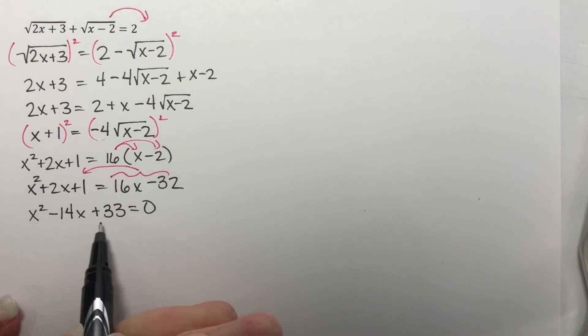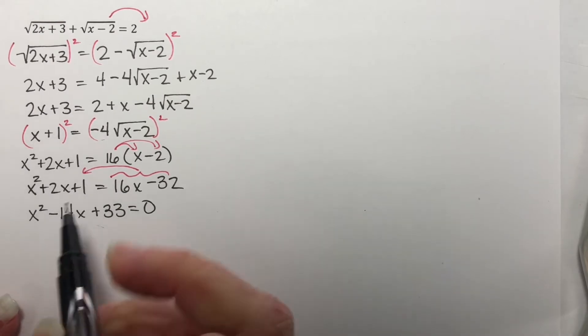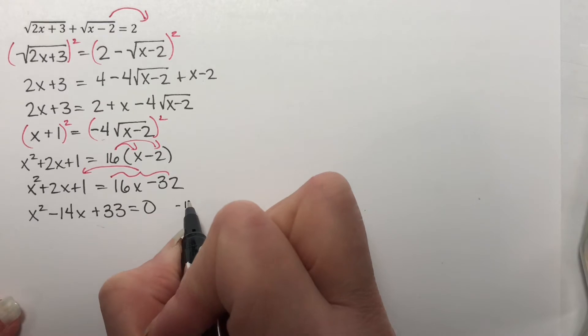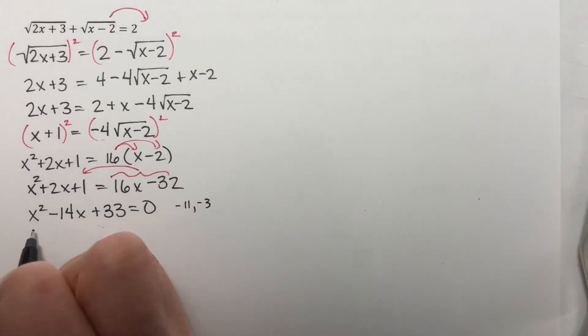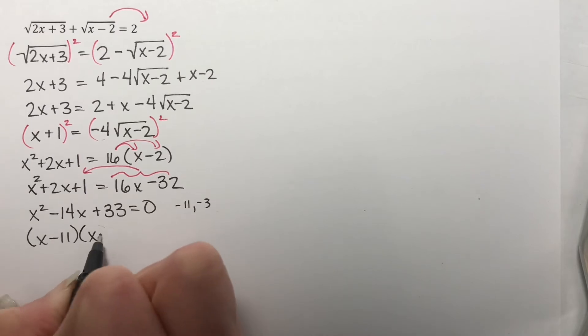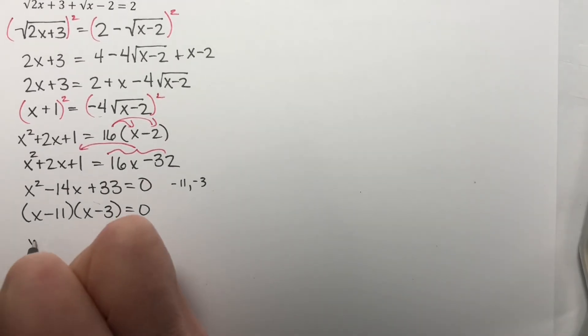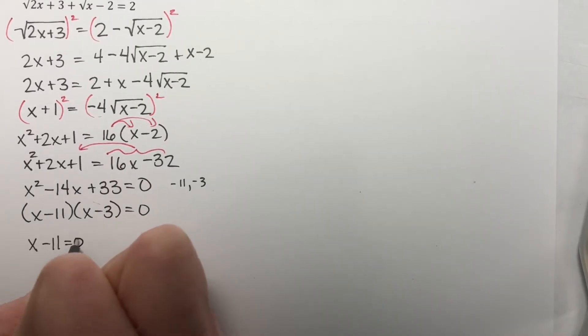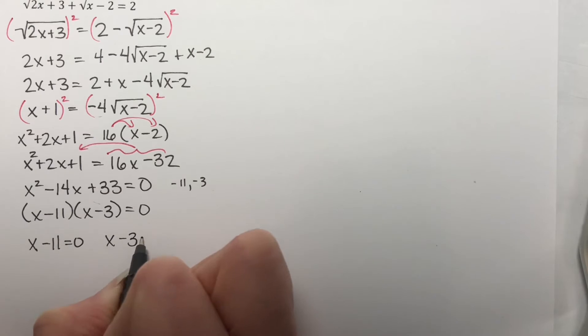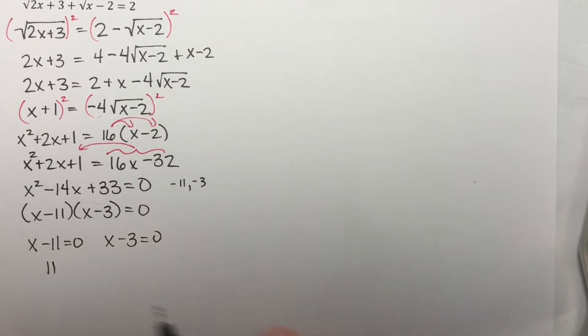And I'm looking for two numbers that multiply to a positive 33, and add to a negative 14. Negative 11 and negative 3 will work. So this factors as x minus 11, x minus 3, equal to 0. And I'll set each of these equal to 0. So from this one, I get 11, and this one, I get 3.